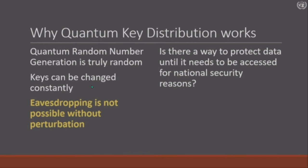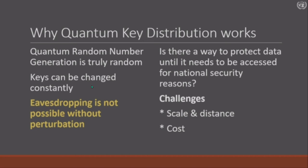So that makes me ask this question, which I leave you with: is there a way to protect data until it needs to be accessed for national security reasons? Or are we just ending up with an even more unbreakable encryption — which yes, is great for the privacy reasons we saw, but also not so great for the law enforcement reasons? Or does the nature of quantum key distribution mean that we could actually have encryption which is secure until it needs to be unsecure? Of course, there are challenges like scale, distance, cost, and procedures. One of the biggest criticisms is that cryptography is the technical thing to be solved — it's the people that are the problem. If I were law enforcement, I wouldn't try to break the cryptography — I'd try to break the fingers of the guy who has the key. Then you get the key. I leave with this question — thank you.